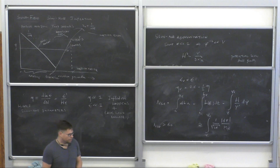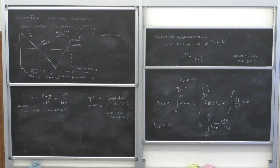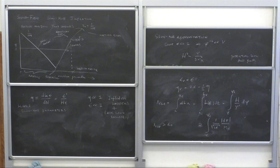There is a lower bound of about 60 e-folds — there is no upper bound. Inflation could have lasted much longer, thermalizing a huge patch, but we cannot observe beyond our Hubble horizon. Any other questions about inflation? If not, that's the end of the lecture for today. Thank you.